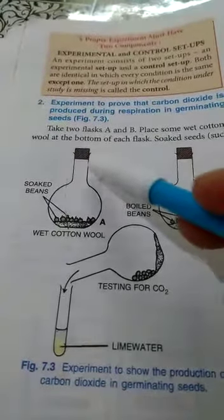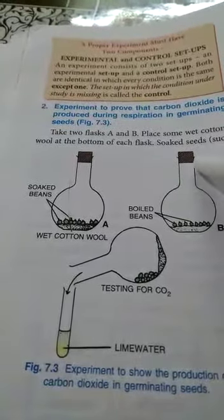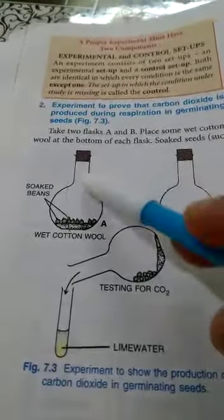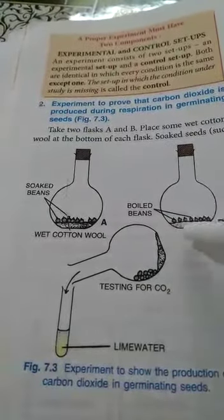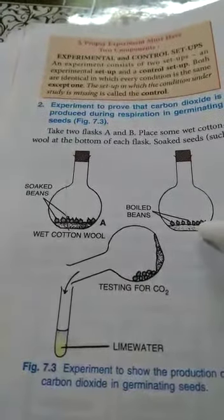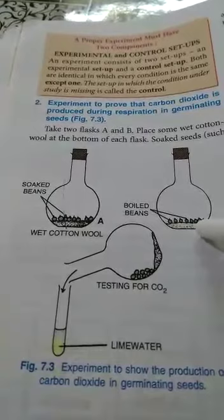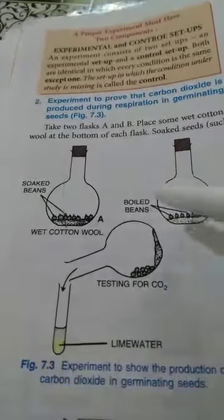Now you have to put a cork on the mouth of both of these conical flasks. Before putting the cork you have to add some antiseptic also to prevent bacterial growth.